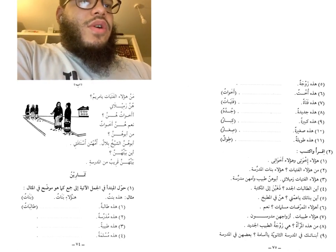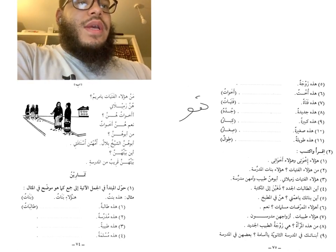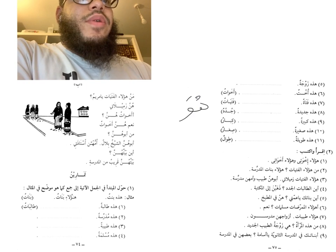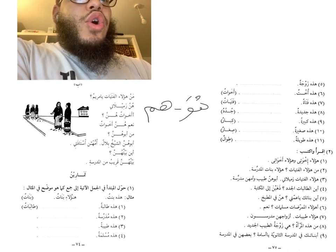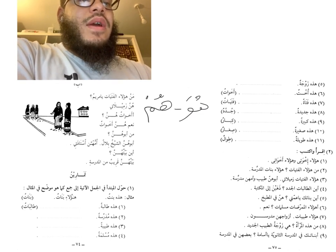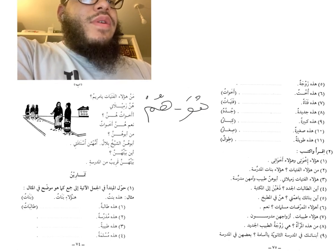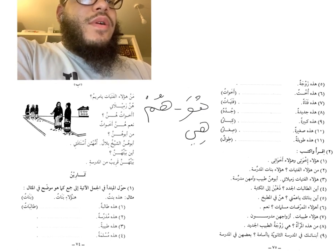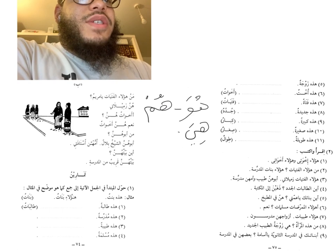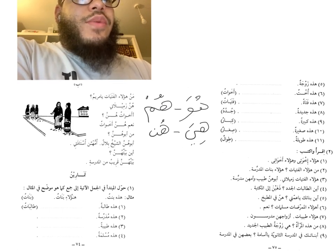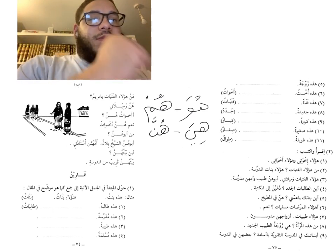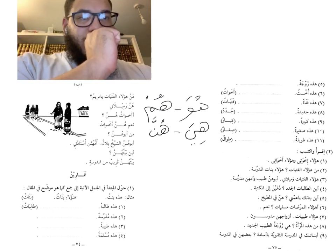We've already learned the pronoun huwa, meaning 'he is.' The plural of that is hum, meaning 'they are.' We also know hiya, meaning 'she is.' Now the plural of hiya is hunna, which we are going to see used in this lesson.